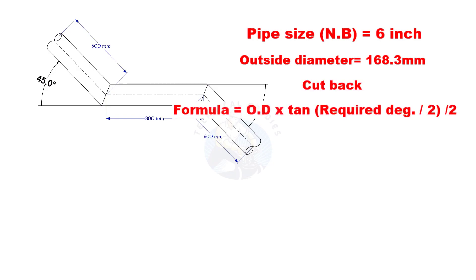Cutback is O.D. multiplied by tan half degree divided by 2. Here, the required degree is 45. Half of 45 is 22.5.